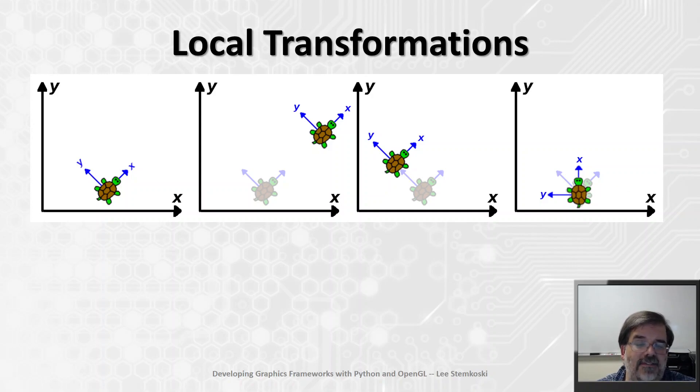Now we still have to answer the question: how, if it is even possible, how can we use matrix multiplication to perform these kinds of local transformations? Now in order to answer that question, we need to introduce one more concept.